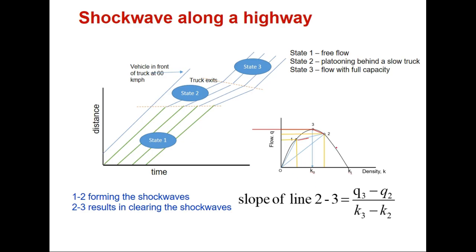The slope of line 2-3 will be (q₃ - q₂) / (k₃ - k₂). Here q₃ will be the capacity of the section — the maximum flow that can occur. k₃ will be the optimum density, which is half of the jam density. k₂ was explained earlier.